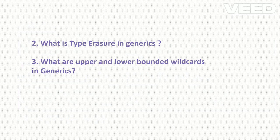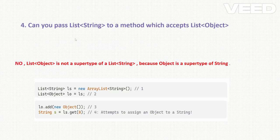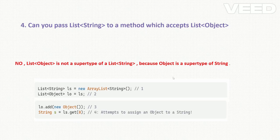So in that answer we also covered: what is type erasure in generics, and what are upper and lower bounded wildcards. Moving on to the fourth question: can you pass a List<String> to a method which accepts List<Object>? The answer is no. Object is a super type of String, but List<Object> is not a super type of List<String>.